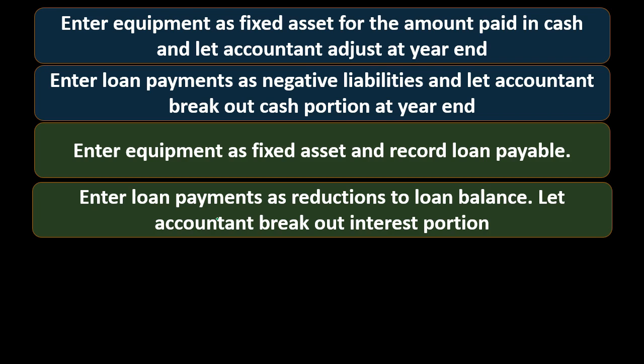It will be a bit more complex of a transaction as we record the loan information. We could get help from the accountant in making sure that journal entry is correct by giving them the loan documentation. Note that this isn't something that happens all the time — the purchase of equipment is a more unusual transaction. We can ask the accountant: here was a purchase of equipment, can you give me the proper journal entry I should enter into the system?